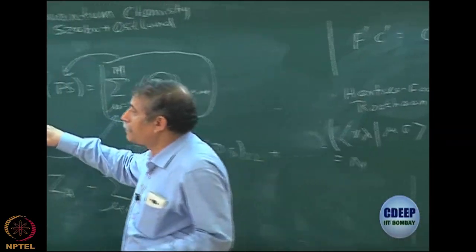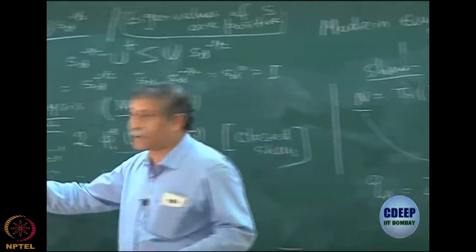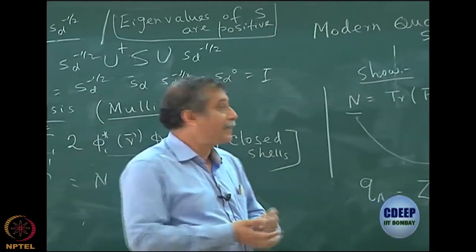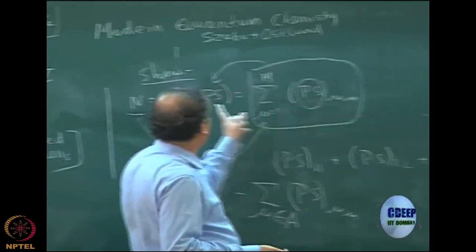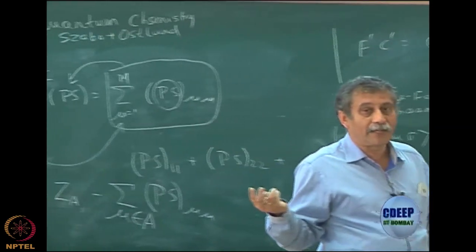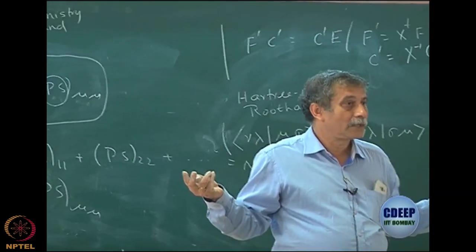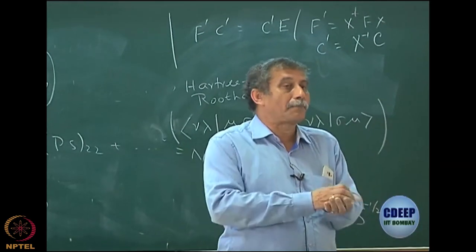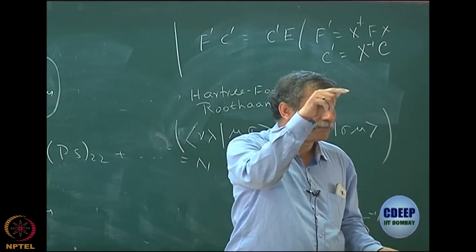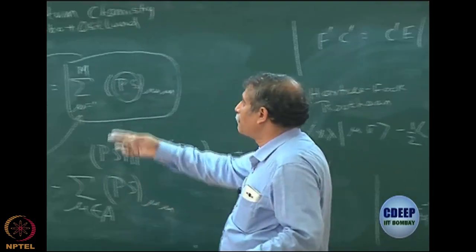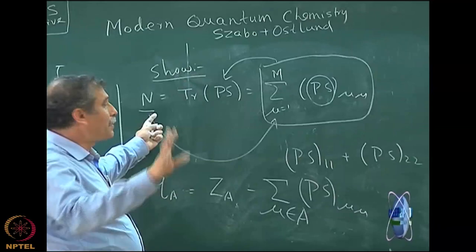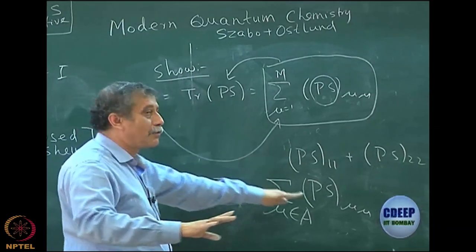Even with this interpretation, there is complete arbitrariness because you know that the trace is invariant under cyclic permutation. So Tr(PS) = Tr(S^{1/2} P S^{1/2}), by associativity and the cyclic invariance of the trace. Both traces equal N — no question. But now I can use S^{1/2} P S^{1/2} as the population analysis. This is what Löwdin did.